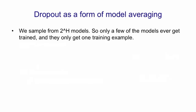So we can think of dropout as a form of model averaging. We sample from these 2 to the H models. Most of the models, in fact, will never be sampled, and a model that is sampled only gets one training example. That's a very extreme form of bagging. The training sets are very different for the different models, but they're also very small.